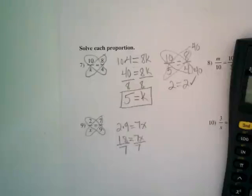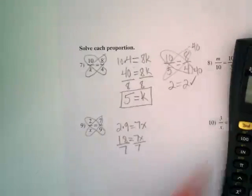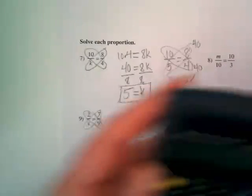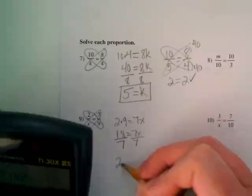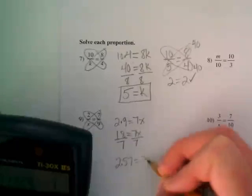So let's try 18 divided by 7. Yeah, I got 2.57. We're just going to say 2.57 equals x.